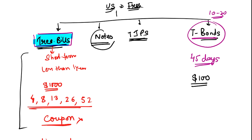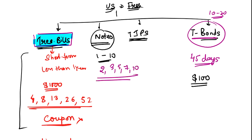Treasury bills can have maturities of 4, 8, 13, 26, or 52 weeks. Higher duration means higher interest rate. Treasury notes have maturities ranging from one year to ten years — available in 2, 3, 5, 7, and 10 year options depending on your needs. You receive semi-annual coupons on treasury notes. Their interest is not taxed at the state or municipal level but is taxed at the federal level.